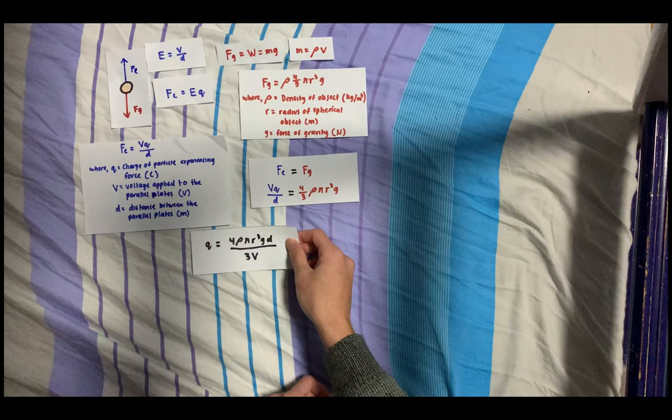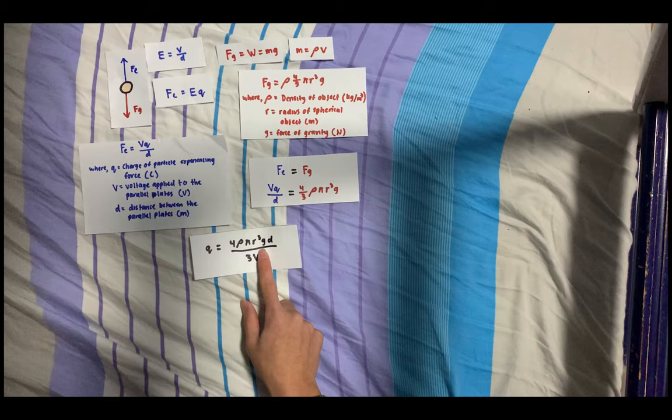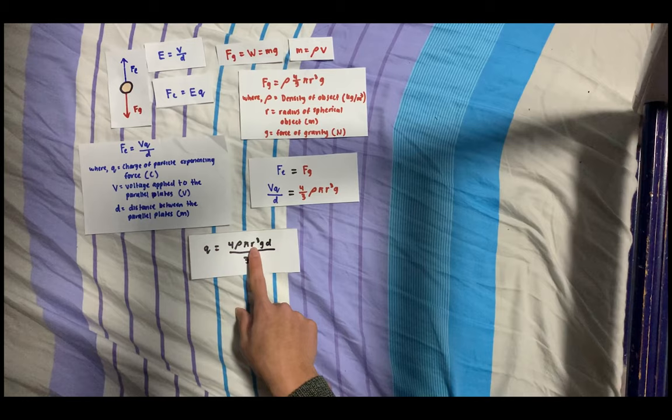Now they know what the density of the oil was, pi as a constant, the force of gravity, the distance between two parallel plates, and the voltage applied. However, they're left with r³, the radius of the oil droplet, which was initially a problem for Millikan and Fletcher to solve.